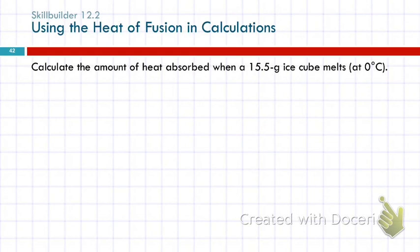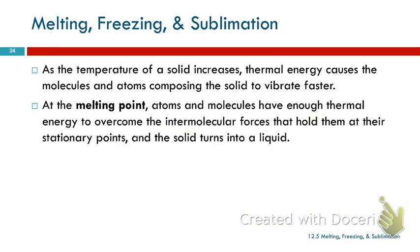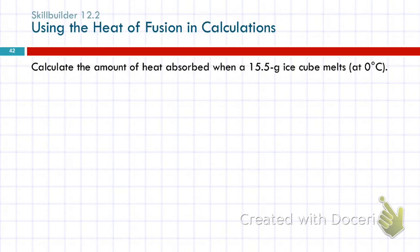So calculate the amount of heat absorbed when a 15.5 gram ice cube melts at 0 degrees Celsius. Well, this problem doesn't give us the heat of fusion. It's not an exam problem, so we can go look it up. So there it is, 6.02. So the heat of fusion for water is 6.02 kilojoules per mole. We had to look that up. We have an ice cube that weighs 15.5 grams. And we're asking how much heat is absorbed when it melts.